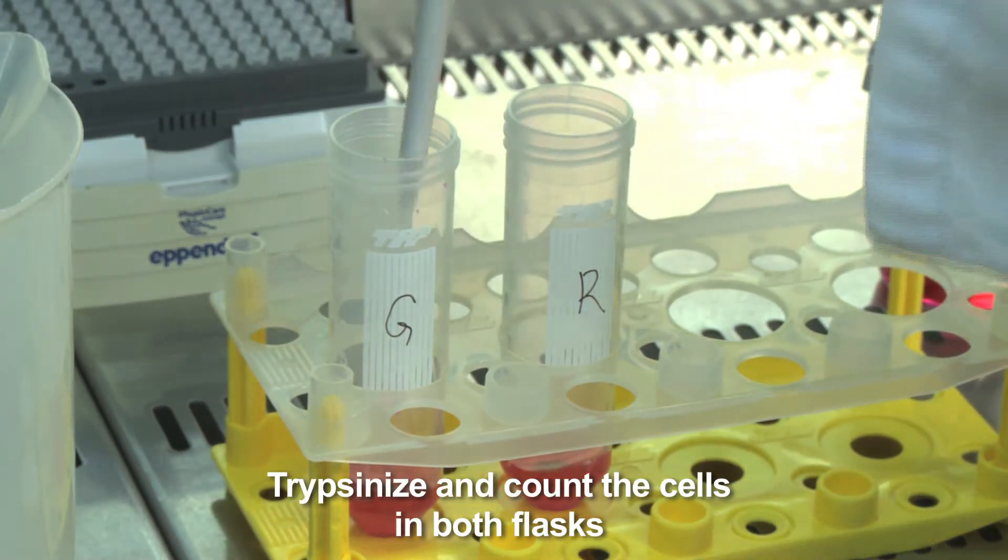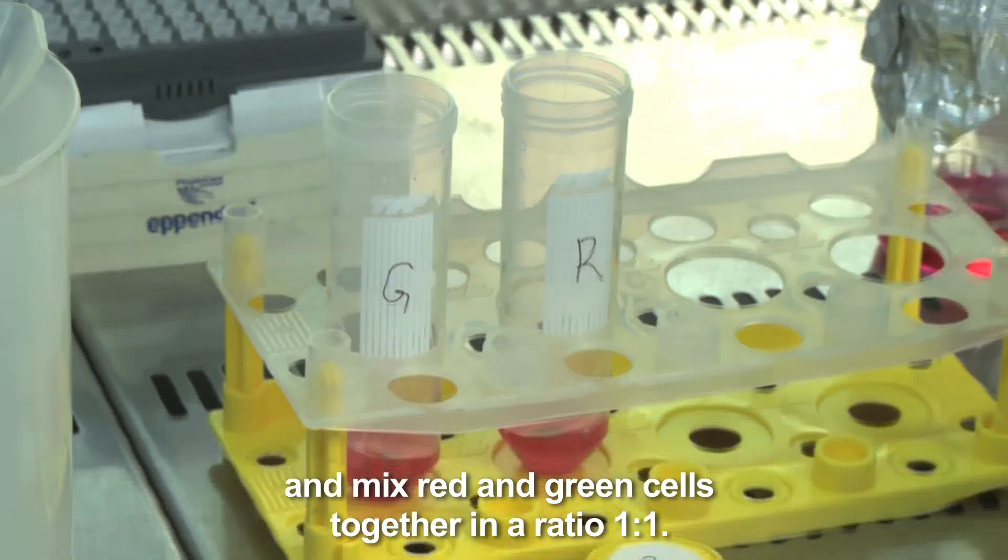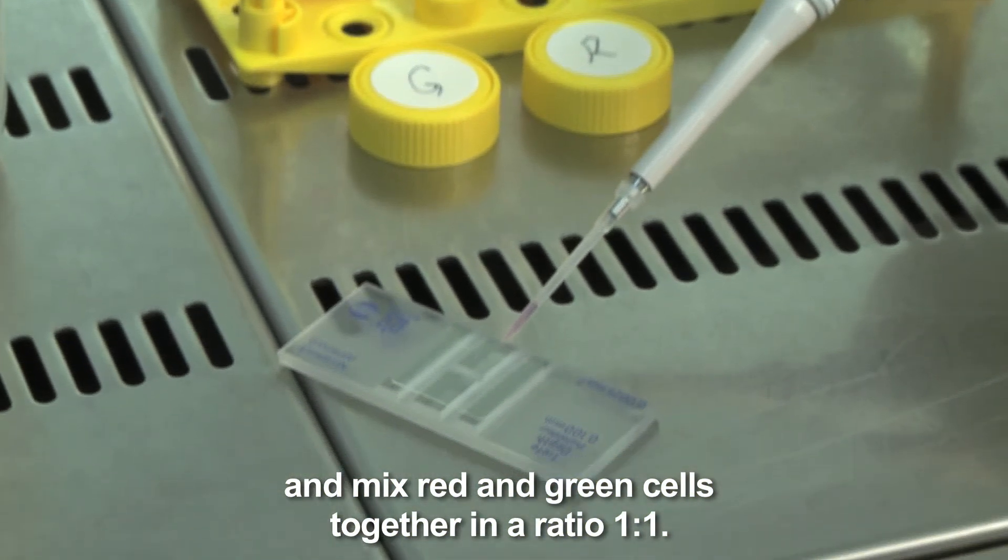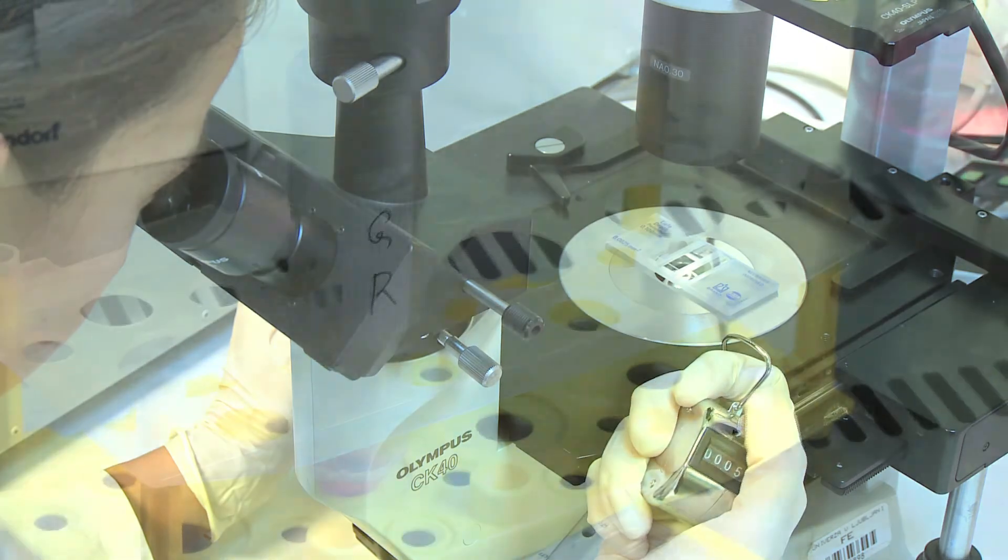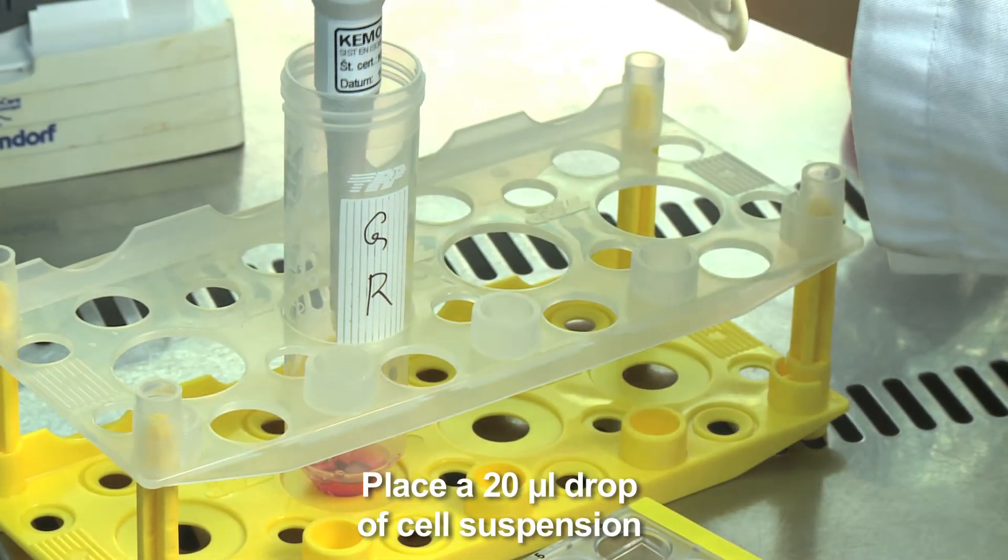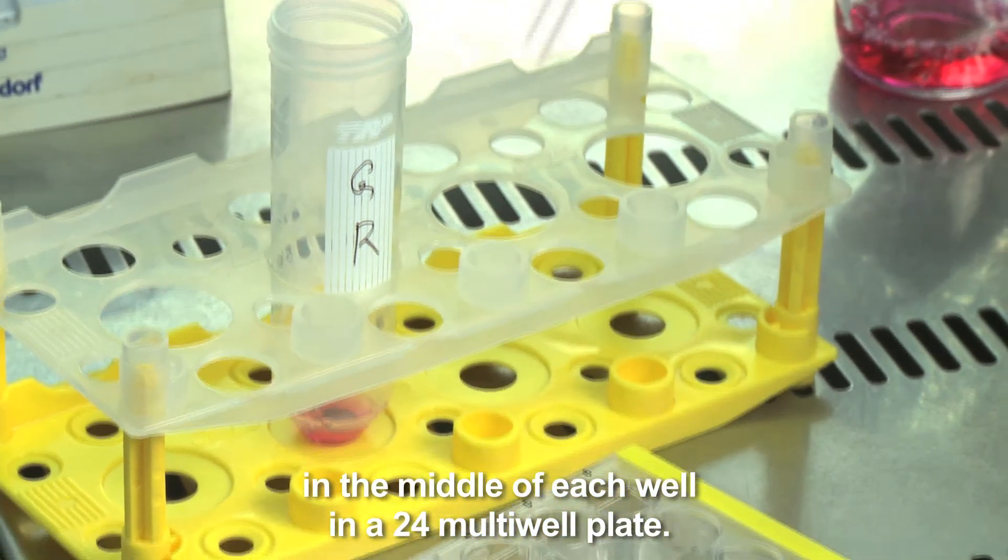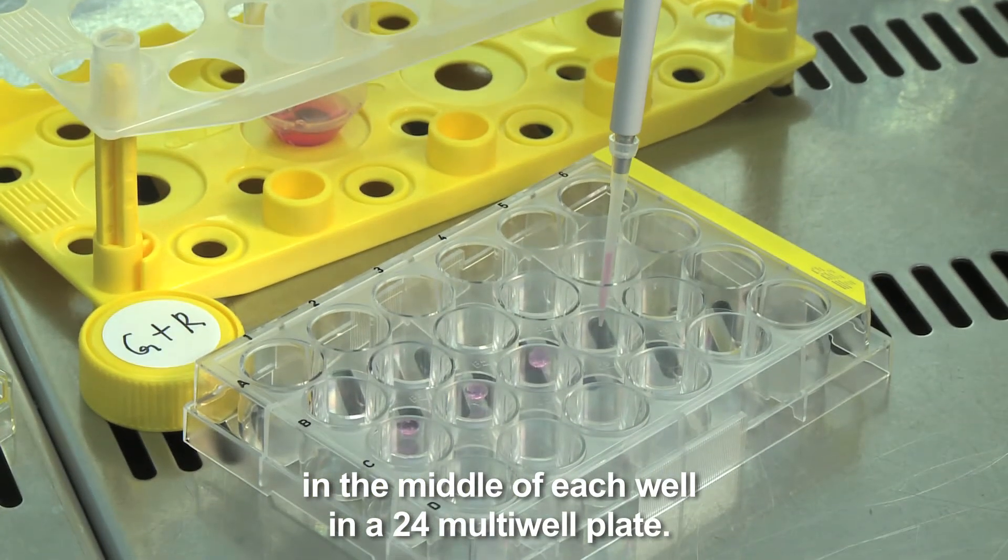Trypsinize and count the cells in both flasks and mix red and green cells together in a ratio 1 to 1. Adjust cell concentration to 5 million cells per milliliter. Place a 20 microliter drop of cell suspension in the middle of each well in a 24-multiwell plate.